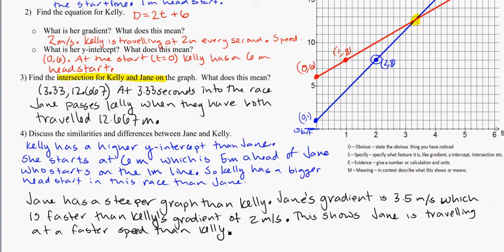So again, I've stated something obvious, one of them is steeper than the other. It's been specific to say it's the gradient, and given calculations here, my gradients. And this shows, in context, that Jane is traveling faster than Kelly for this race.